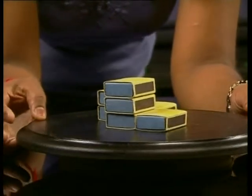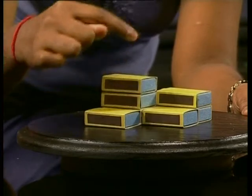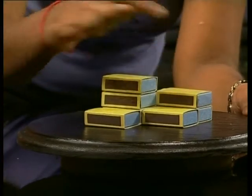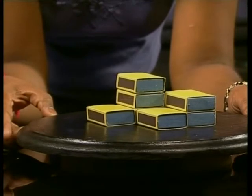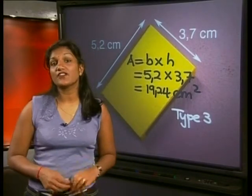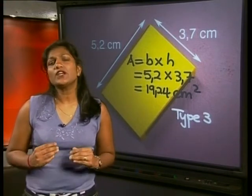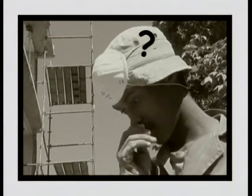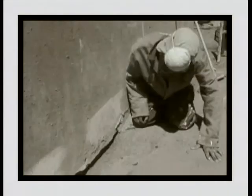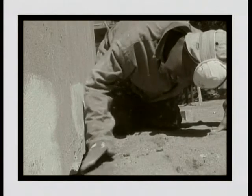Now let's look at the top view. We have 4 type 3 rectangles. We don't have to count the number of faces underneath the structure because it is stuck down. If this structure were a house, would we paint the foundations underneath? Of course not.